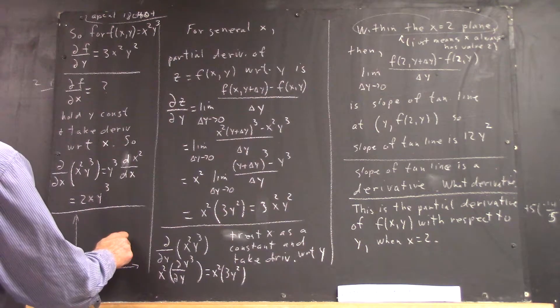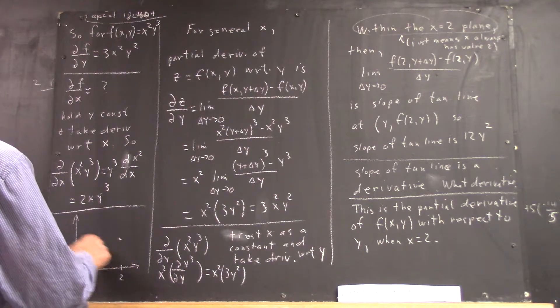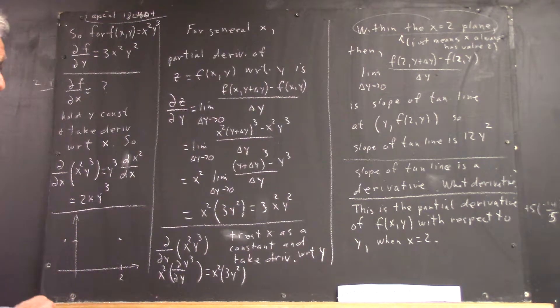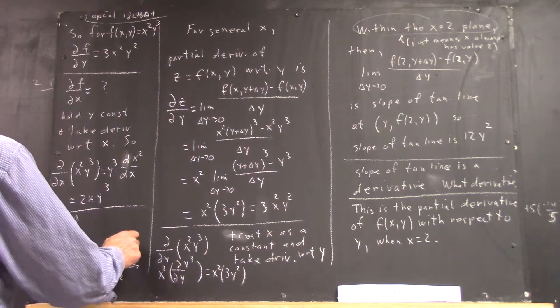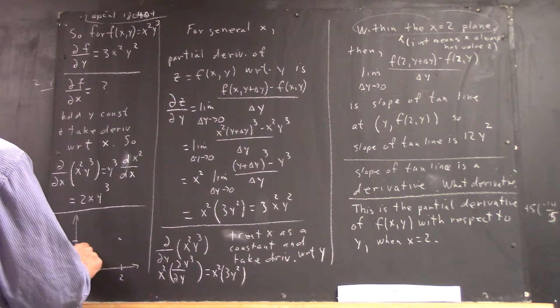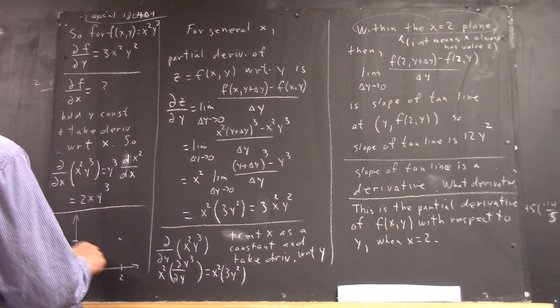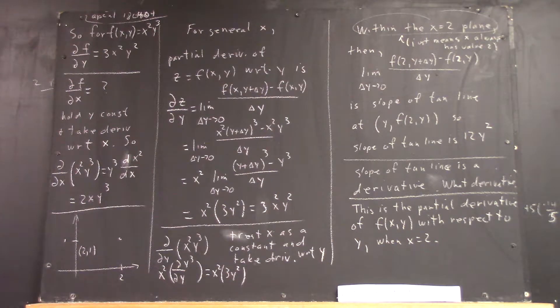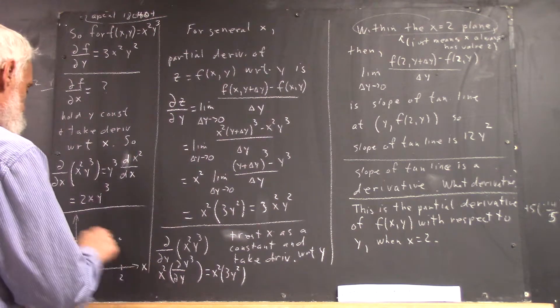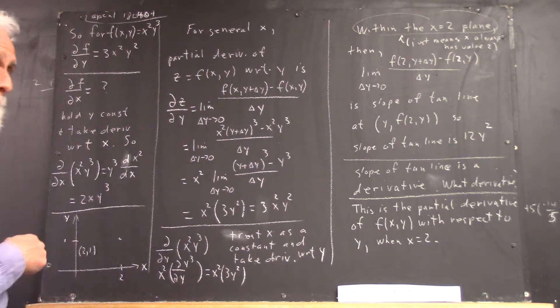So x is 2, y is 1. And here's the point, 2, 1. Here's x, here's y. Okay?